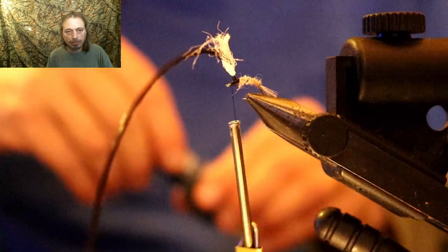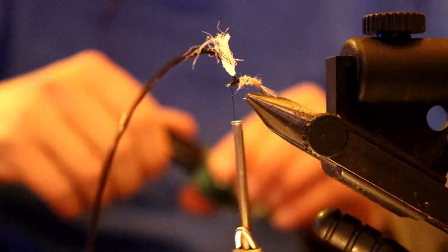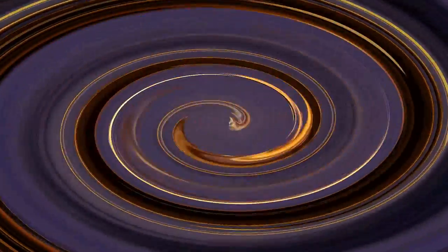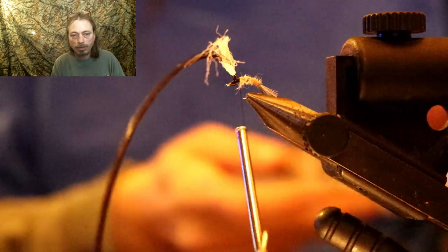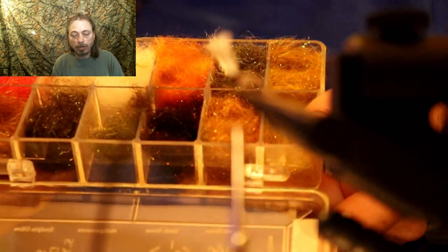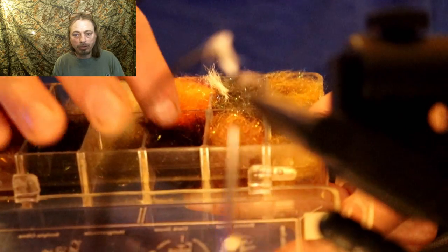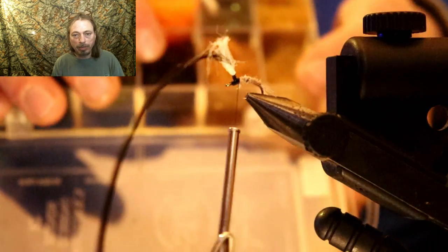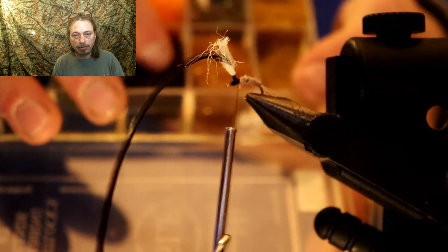Now we're gonna take some black ice dubbing and we're gonna wrap that around the bottom of the post and up to right behind the eyelet. Leave a little gap there to form a head right behind the eyelet.